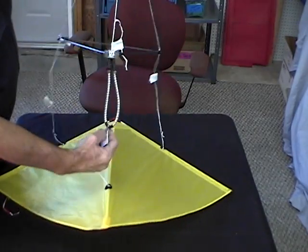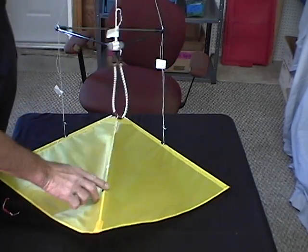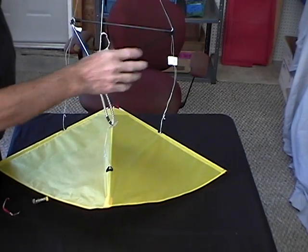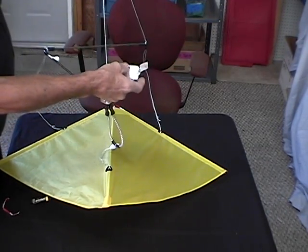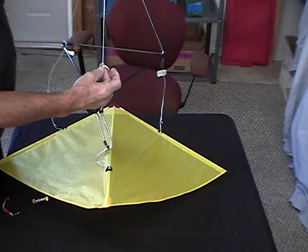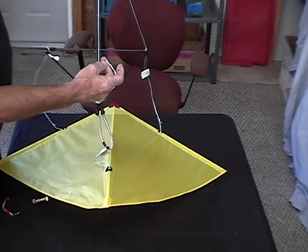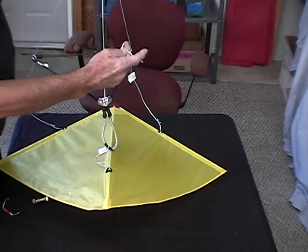You'll notice there's a bungee cord at the bottom that goes to the keel. From here to this line you'll see a line with knots on it. Adjust your line up and down these knots.